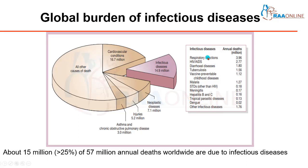Among the infectious diseases themselves, the maximum deaths are due to respiratory infections, HIV and AIDS, diarrheal diseases — mainly in tropical and developing countries — tuberculosis, vaccine-preventable childhood infections, malaria, sexually transmitted infections, meningitis, hepatitis, various tropical parasitic diseases, and dengue. All these diseases form the total of the 15 million infectious disease deaths.